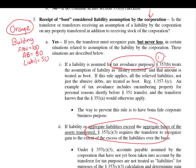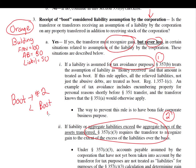Tax avoidance is the first way you can have boot with liability assumption. The second is when aggregate liabilities of all transferred properties exceed the aggregate bases of all transferred properties. If you do have boot from liability assumption, the same rule applies — you must recognize gain, but never loss. Whatever amount of the liability assumption is considered boot, we treat it just like boot in the prior analysis: it's the lesser of the boot or the realized gain.